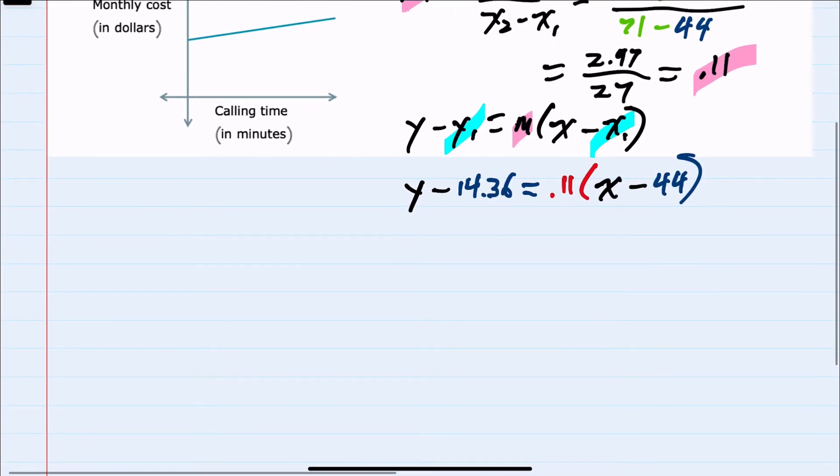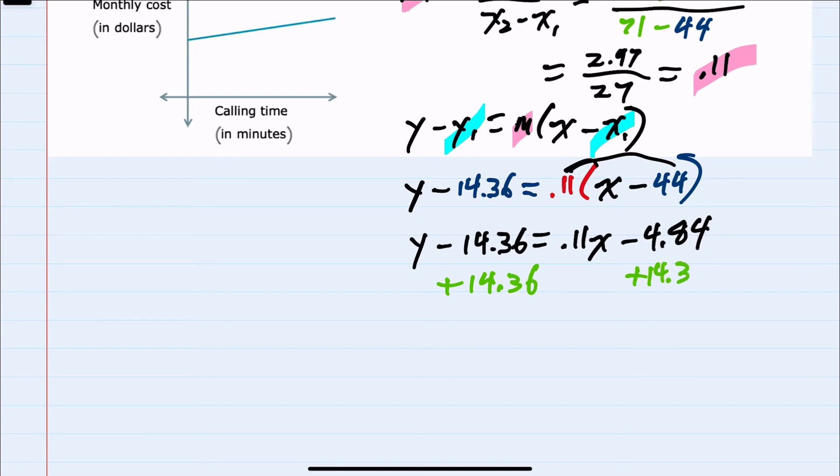I can simplify by first distributing on the right-hand side. So 0.11 times x is 0.11x, and 0.11 times minus 44 is minus 4.84. Then continuing to solve for y, I would add the 14.36 over to the other side to isolate the y, and that would give me y equals 0.11x plus 9.52.